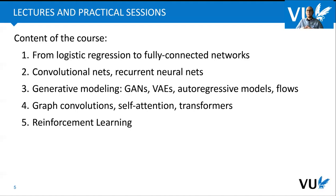Then we have three additional groups of topics. The first is about deep generative modeling: GANs (generative adversarial networks), VAEs (variational autoencoders), autoregressive models also known as ARMs, and flows. The second group covers graph convolutions, self-attention, and transformers. And the last group is about reinforcement learning, or deep reinforcement learning.